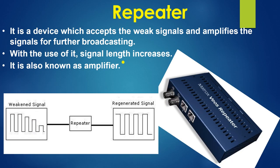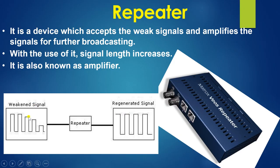Next is repeater. A repeater is a device which accepts weak signals and amplifies the signals for further broadcasting. With the use of it, the signal length increases and it is also known as an amplifier. If your signal is weak and you put a repeater, the signal is generated with high speed. Here the signal is very low and when you insert the repeater, the signals are at the same frequency.